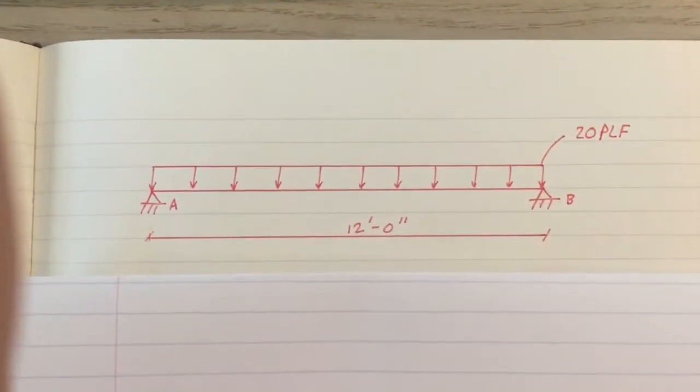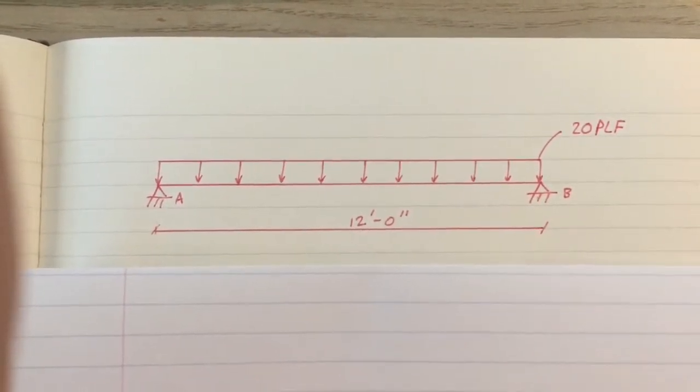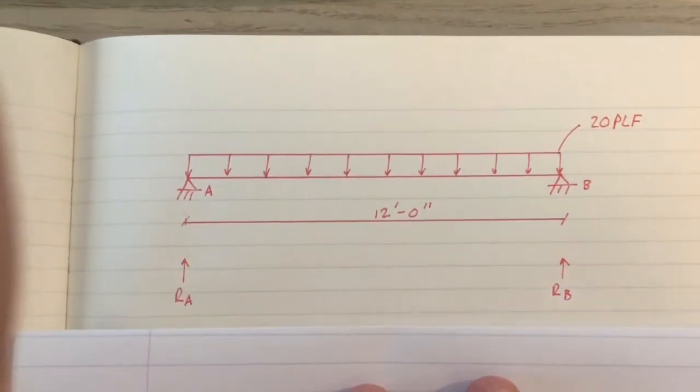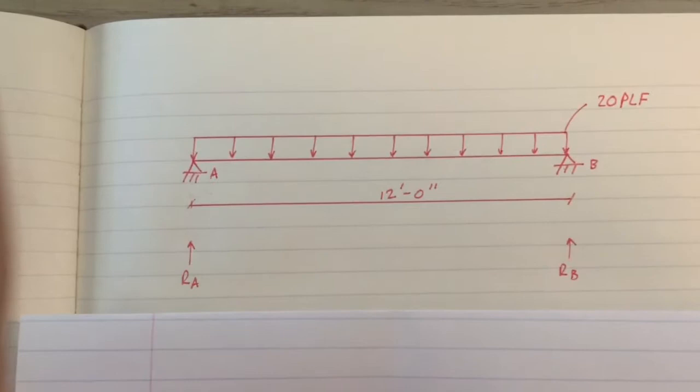We have two pinned reactions at its ends, reaction A and reaction B. So what we want to do first is figure out the reaction of A and reaction B.